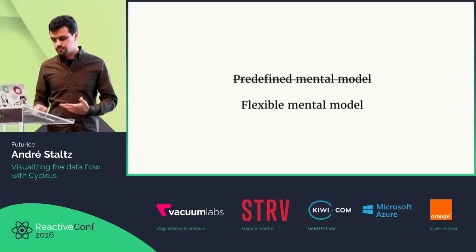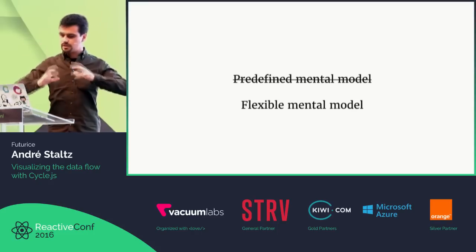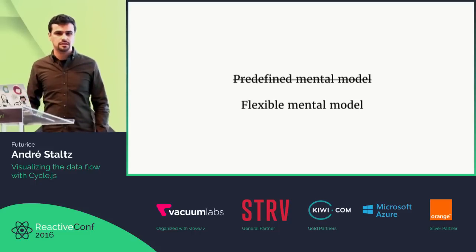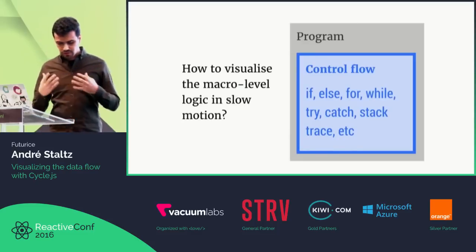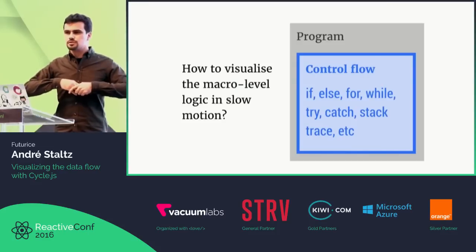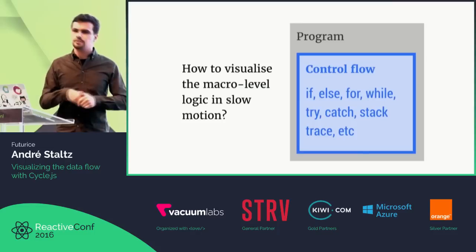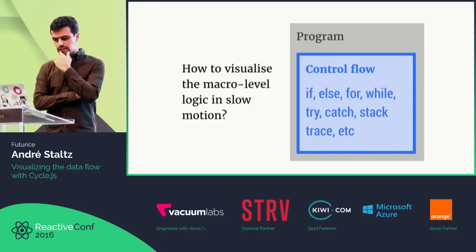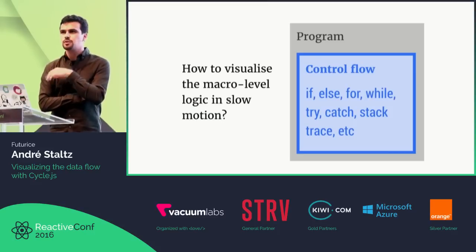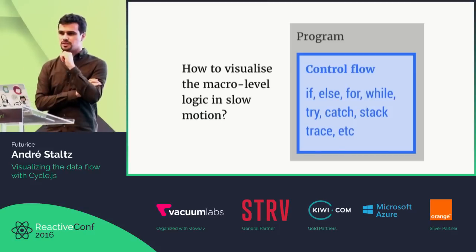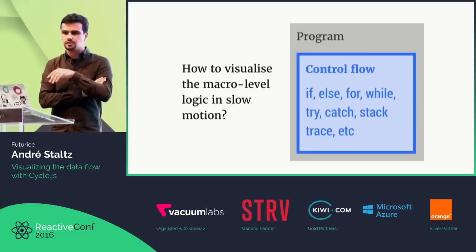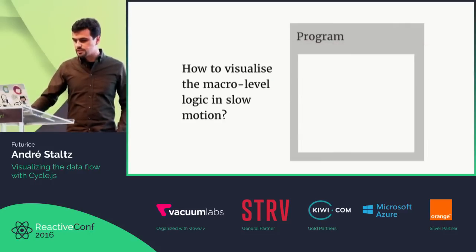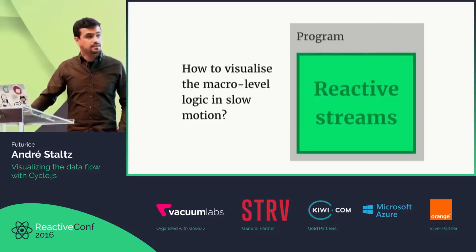So this is what I decided to do. Instead of having a predefined architecture, I wanted to allow people to do all kinds of variations of their architectures but still have the ability to visualize. Given any program, how do I just make it possible to see the data flowing through it — not like a debugger, but in a glance? It turns out you can't just visualize normal control flow. You need to replace it with something else that can be visualized — you can't just understand all this if/else and stack trace in a glance.